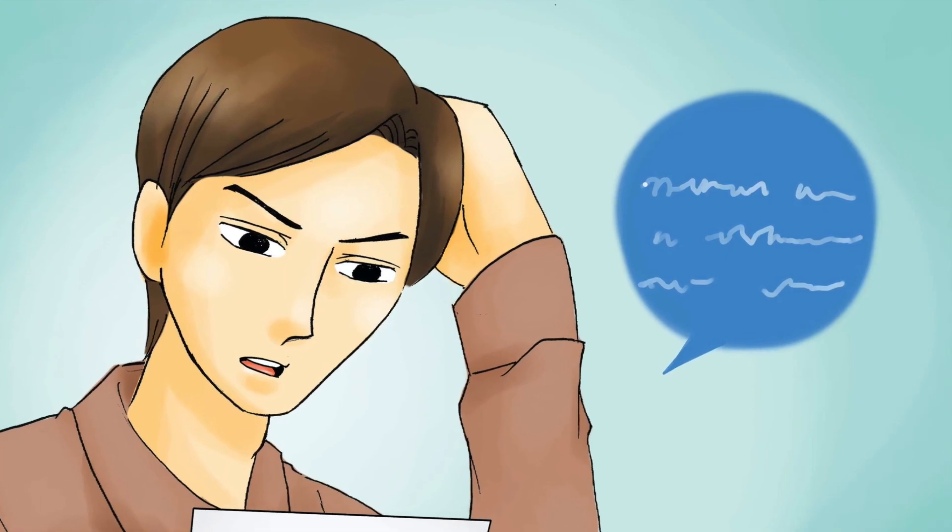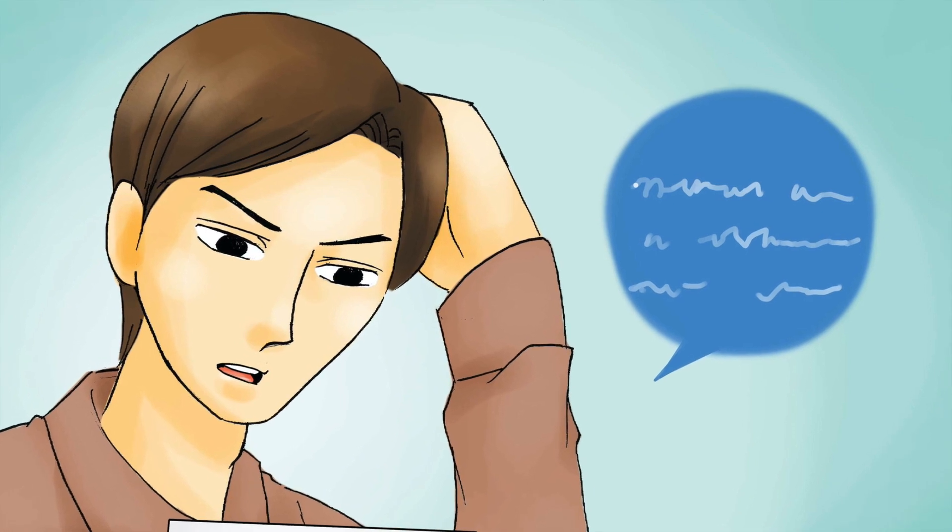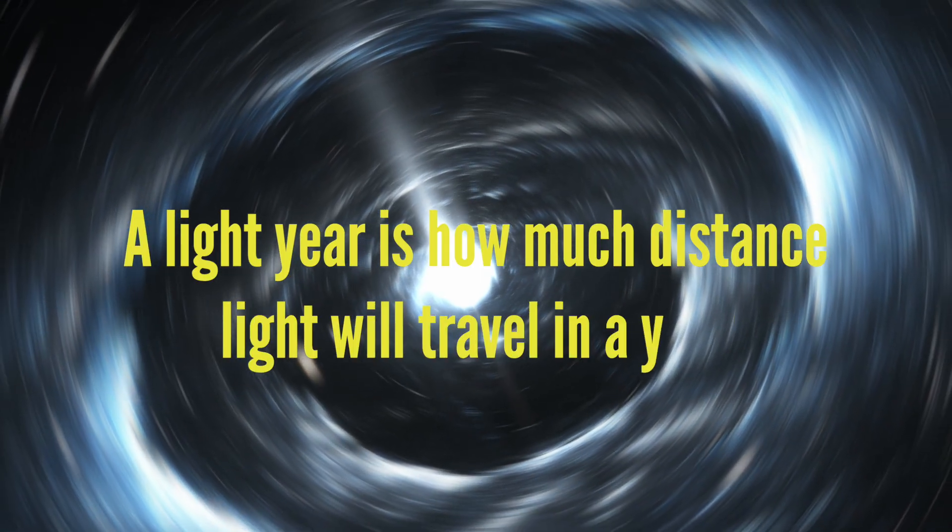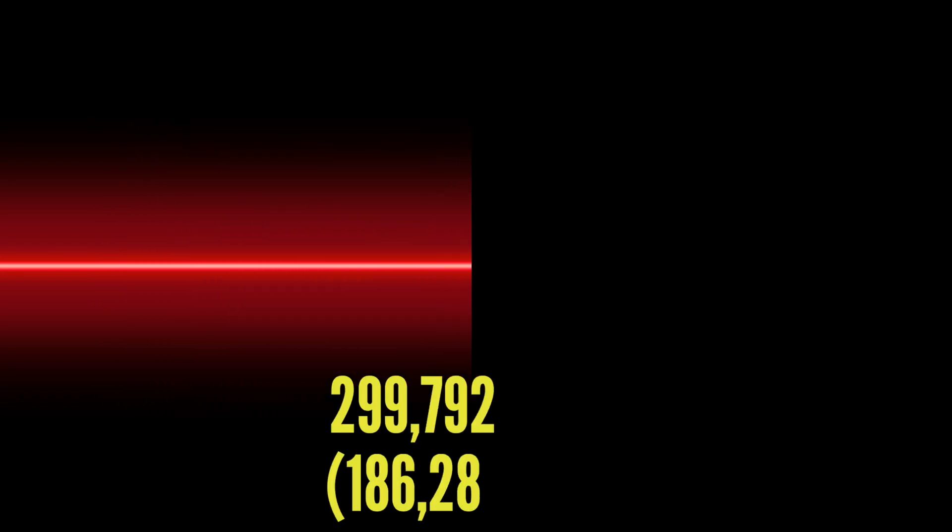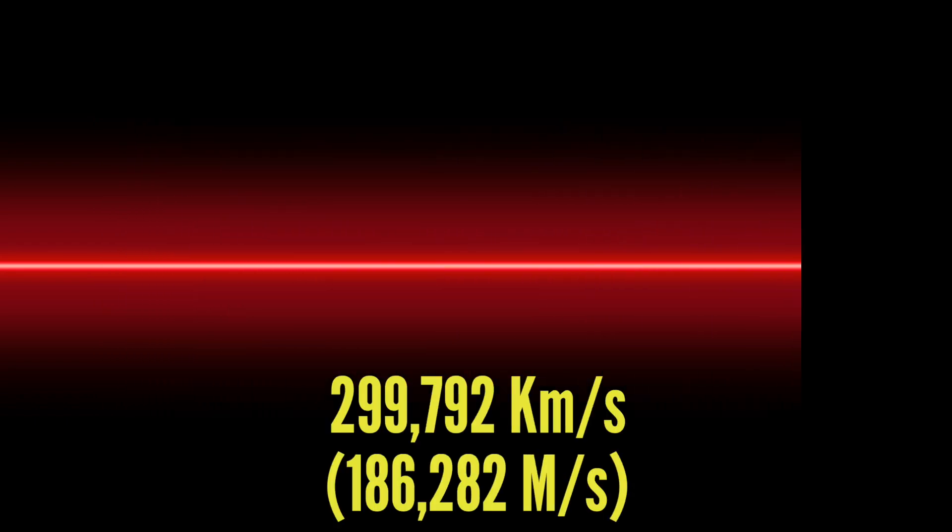Before we can understand it, we have to work out how big a light year is. A light year is how much distance light will travel in a year. Light travels at a speed of 299,792 km per second in a vacuum.